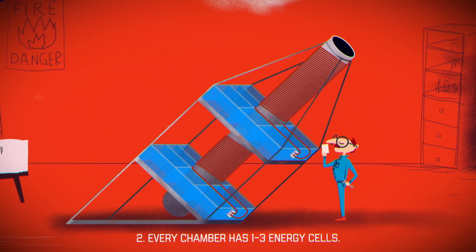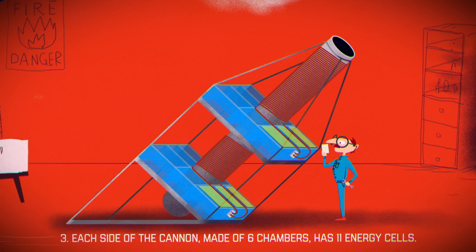Every chamber has one to three energy cells, and each side of the cannon made of six chambers has 11 energy cells.